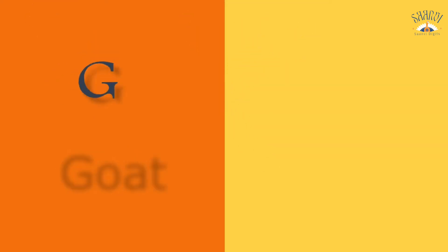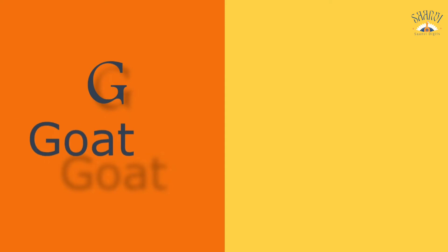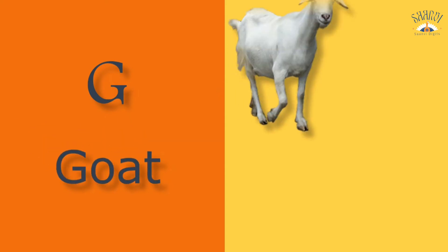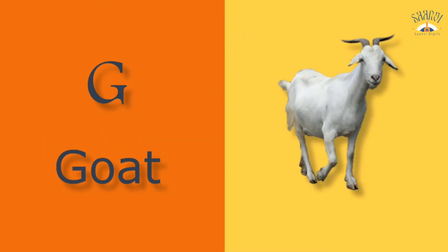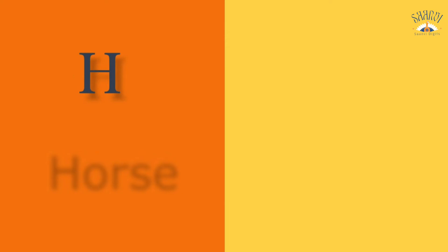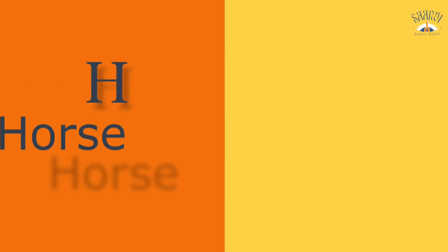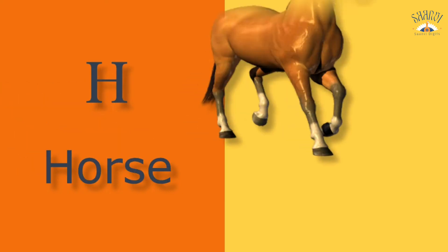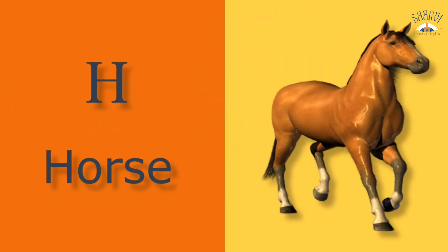G for goat. Goat means bakri. H for horse. Horse means ghoda.